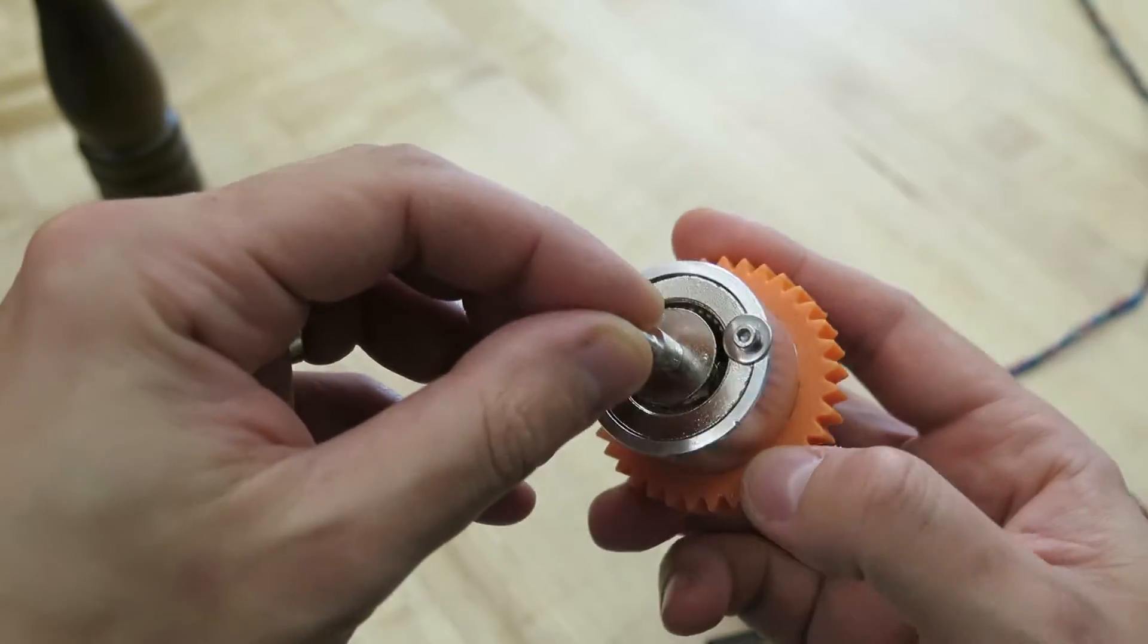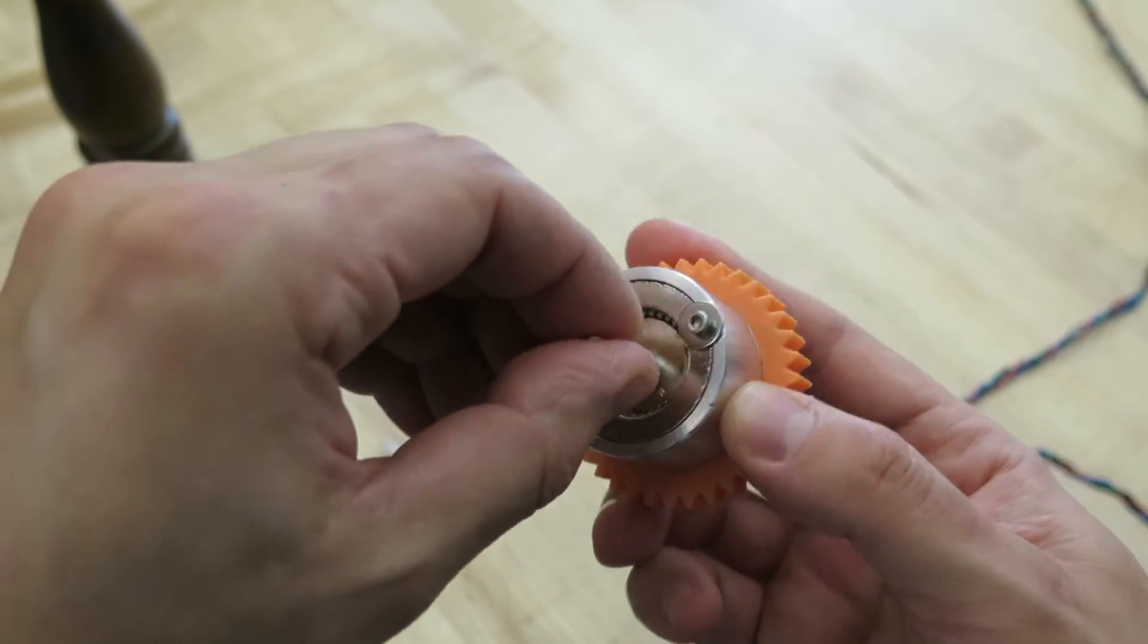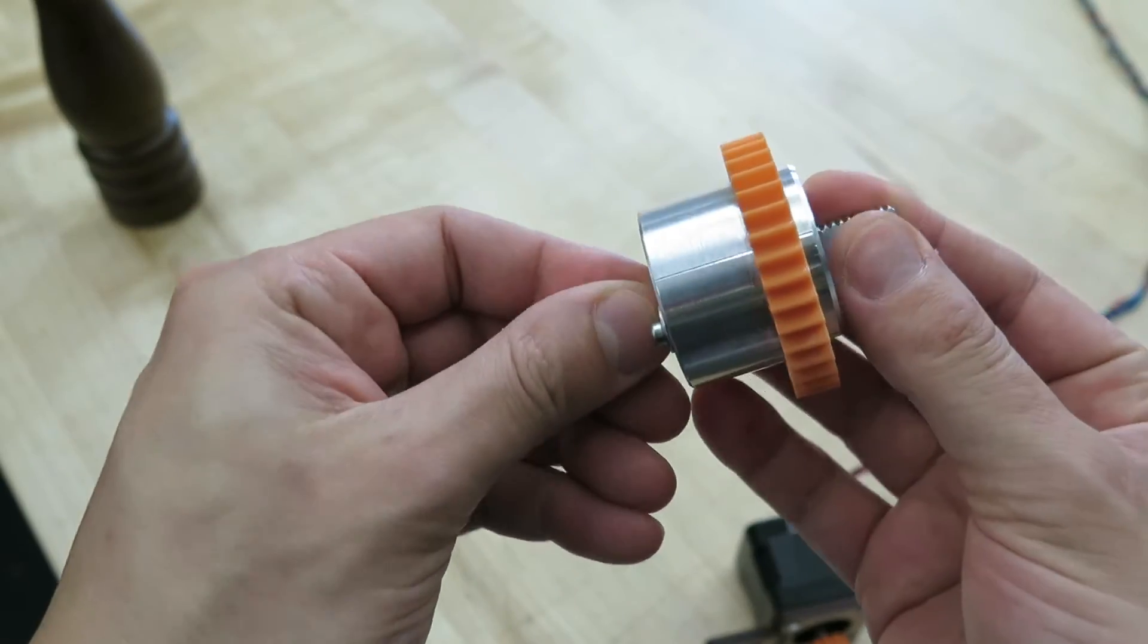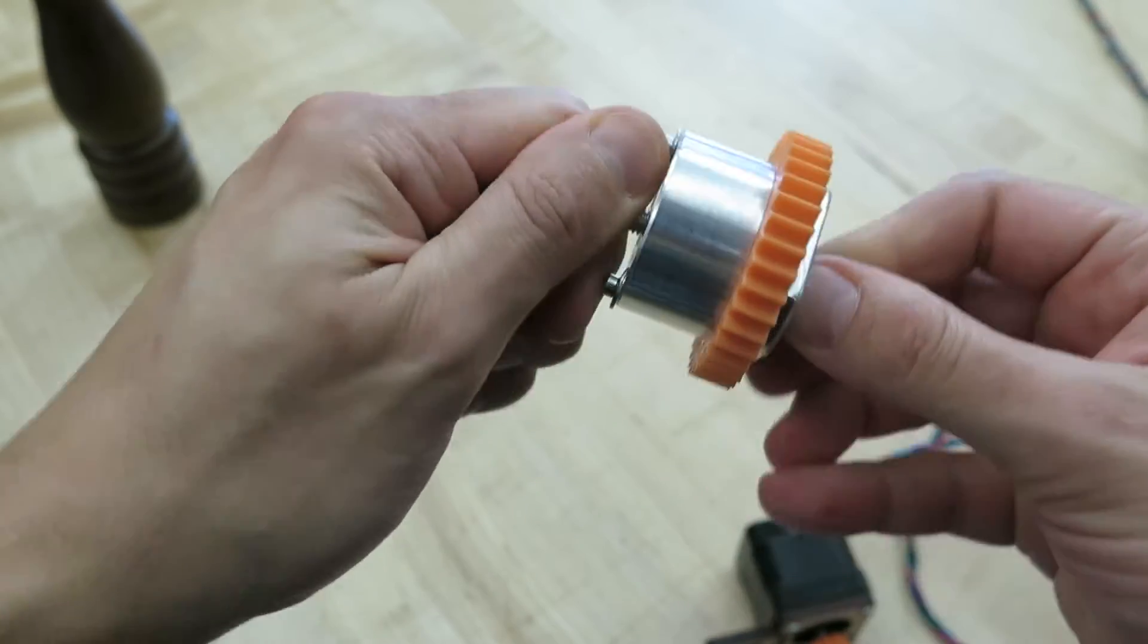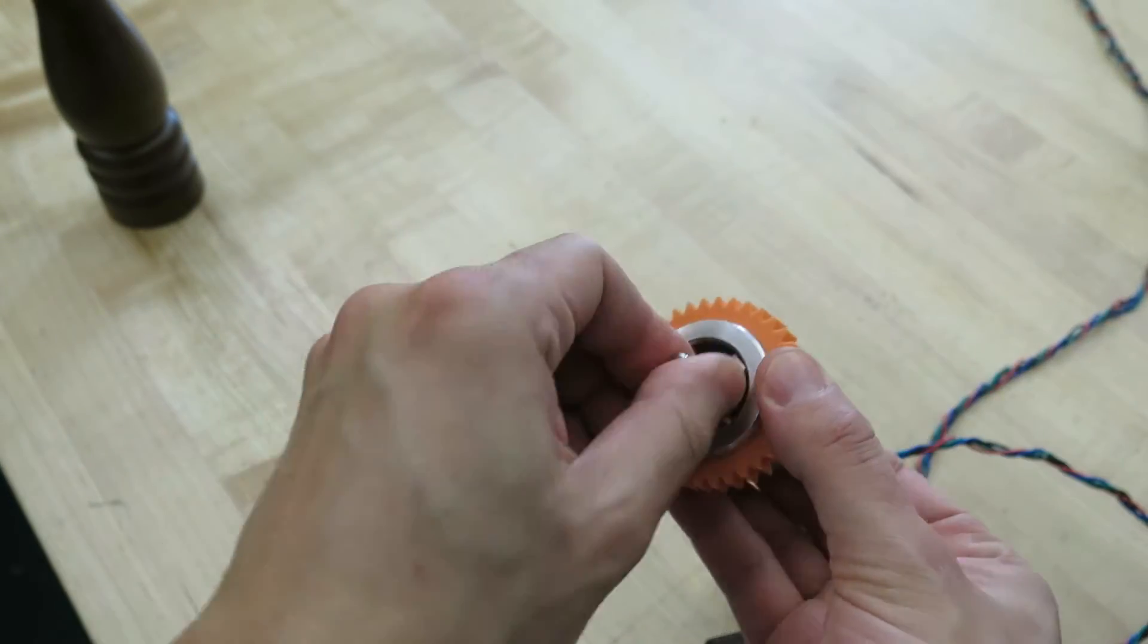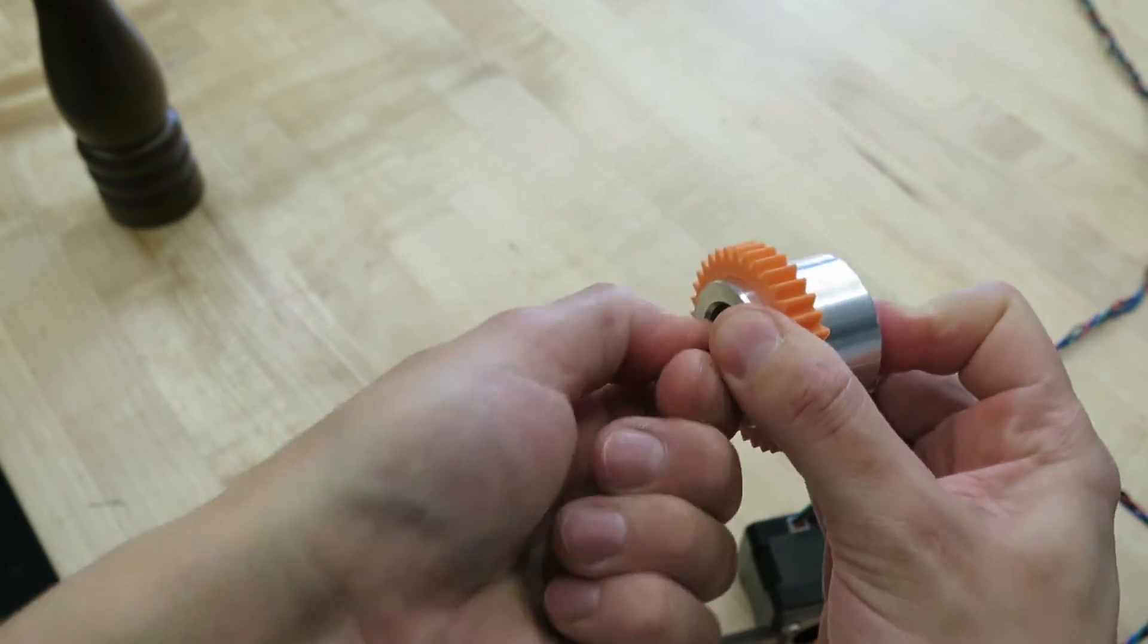You can actually see the grinder core and the grinder housing around it. And if I turn this I can remove them both.